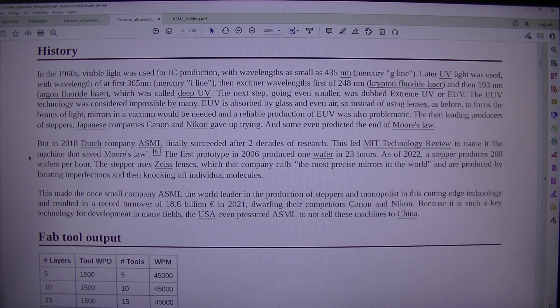The first prototype in 2006 produced one wafer in 23 hours. As of 2022, a stepper produces 200 wafers per hour. The stepper uses Zeiss lenses, which that company calls the most precise mirrors in the world, and are produced by locating imperfections and then knocking off individual molecules. This made the once small company ASML the world leader in the production of steppers and monopolist in this cutting-edge technology and resulted in a record turnover of 18.6 billion euros in 2021, dwarfing their competitors Canon and Nikon. Because it is such a key technology for development in many fields, the USA even pressured ASML to not sell these machines to China.